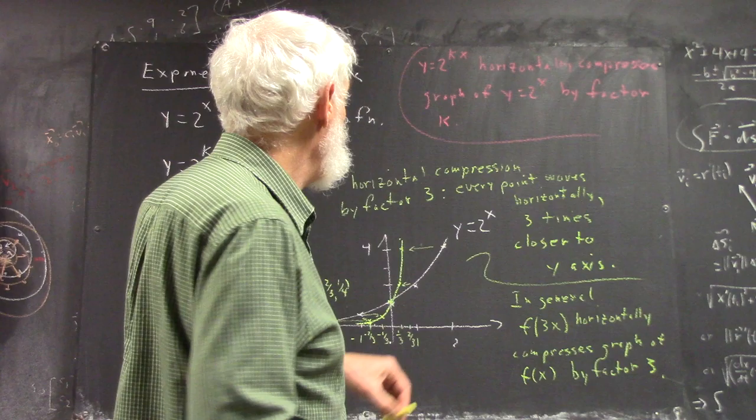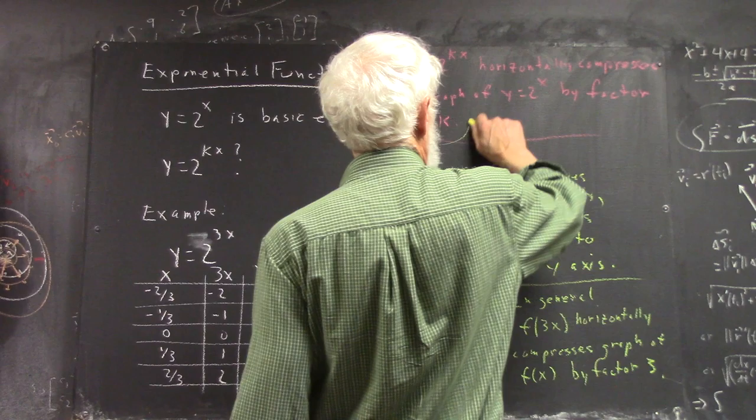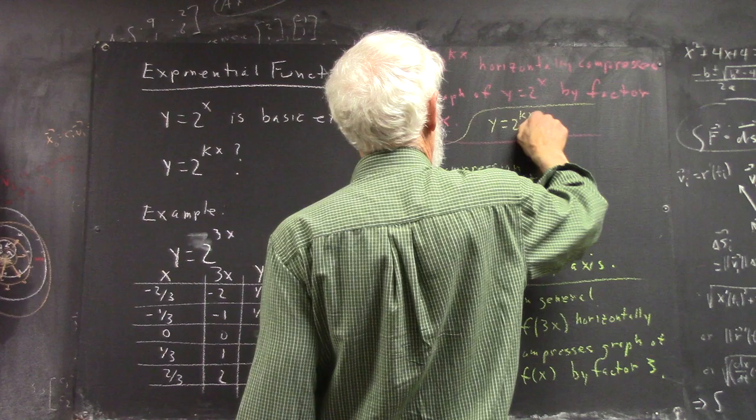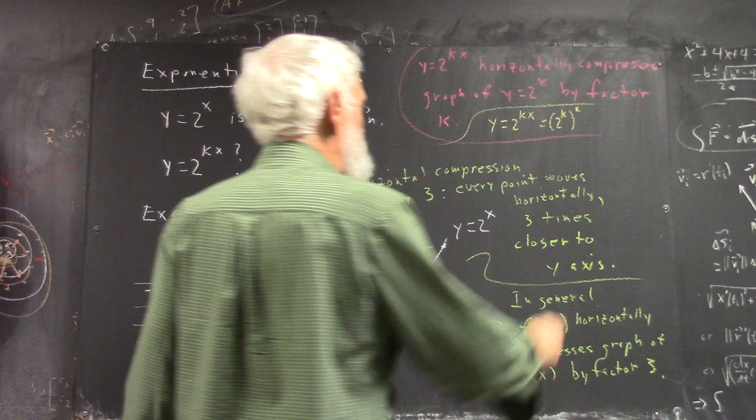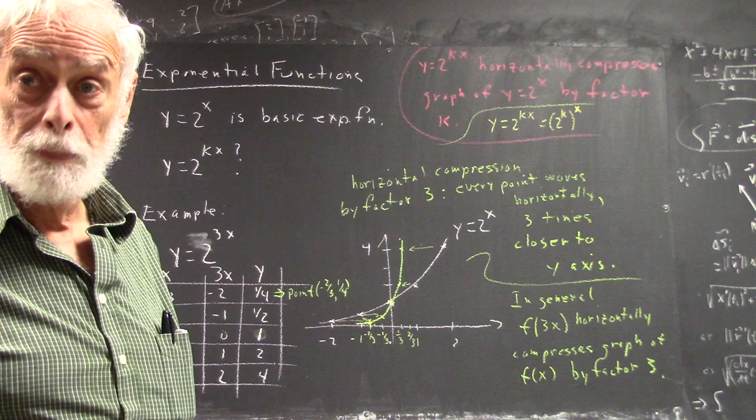Now, the other thing is, I don't really have a good place to write it, so I'll just kind of start writing it up here. Y equals 2 to the kx is just 2 to the k raised to the x. That's basic laws of exponents, right?